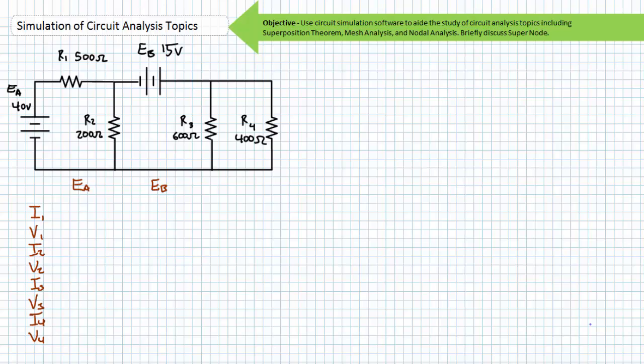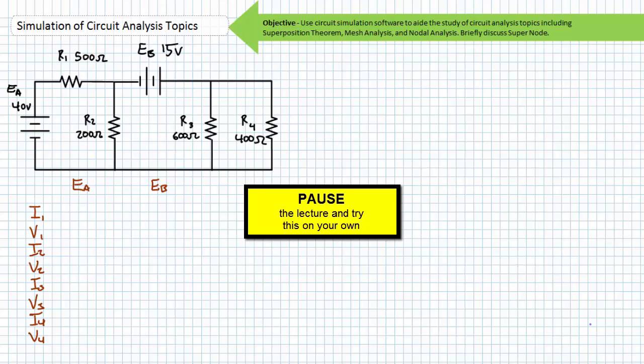By all means, pause the lecture and see if you can solve for the voltage drop across and the current through each individual resistive component. And once you've done this, go ahead and account for magnitude, polarity, and direction, and determine the total response for this series-parallel circuit with two sources.